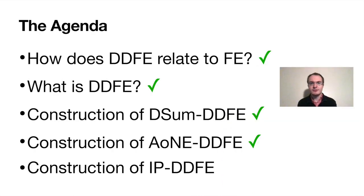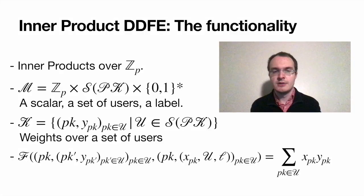We can finally move on to our most interesting functionality, inner product. It's the most complicated one, so we'll simplify things a bit so we can focus on the important ideas. The messages contain a scalar, and, as we're used to by now, a set of users and a label. The keys are a vector on a set of participants, so it is a set tying each participant to a scalar. And the functionality is that if all messages agree on the set of participants and the label, and all keys agree on a unique vector Y over that same set of participants, we should be able to compute the inner product, which is the sum of the message scalars weighted by the key scalars.